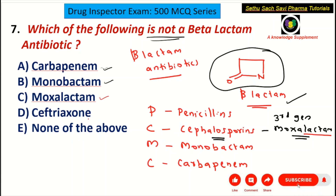Coming to the fourth choice, ceftriaxone is also an example of third generation cephalosporin, which also contains beta-lactam. That means all four drugs contain beta-lactam. Since the question asks which is NOT a beta-lactam, the correct answer is E choice: none of the above.